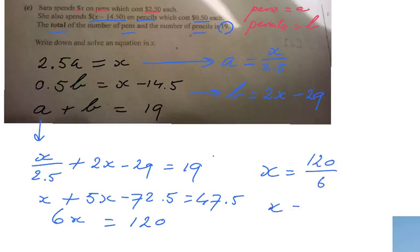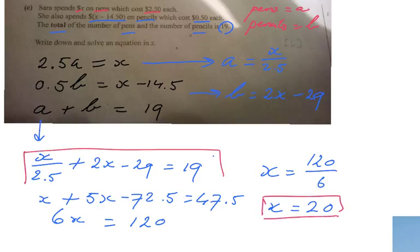So that will be your final answer. Well, actually this equation and X equals 20 is your final answer, because the question is write down the equation in X and solve it. So X is 20. You can now check that for yourself if you want.